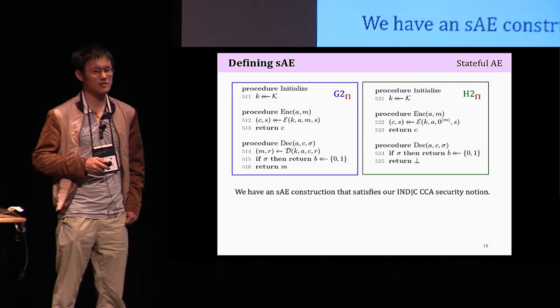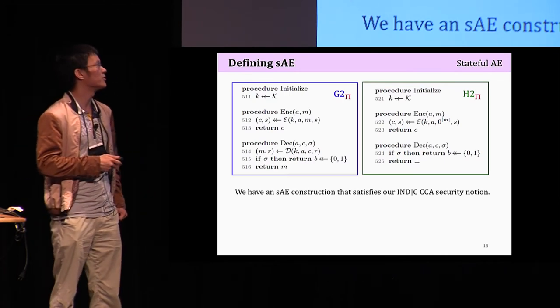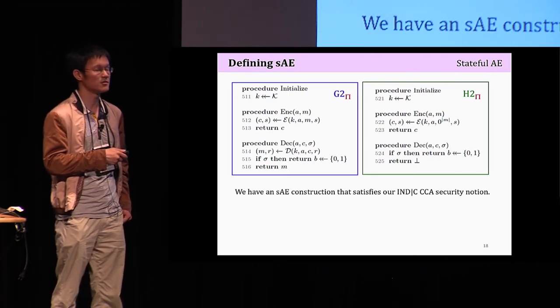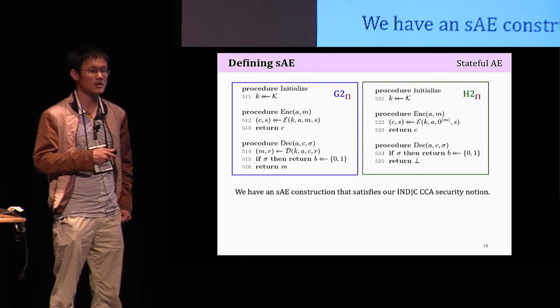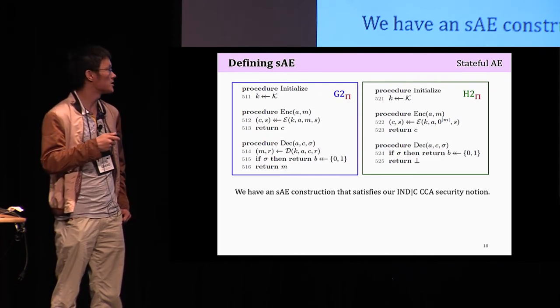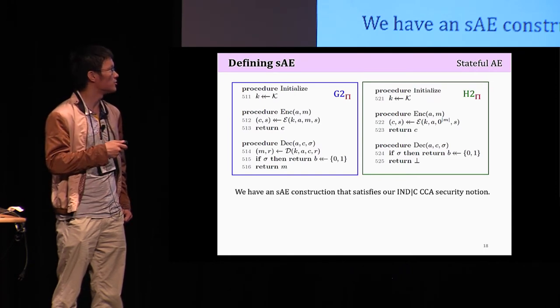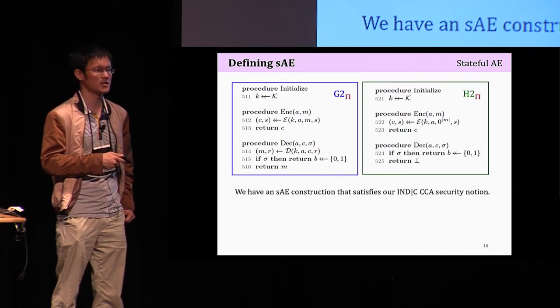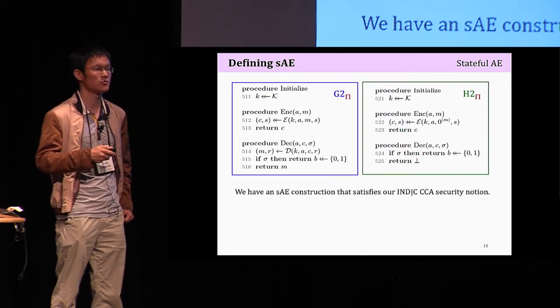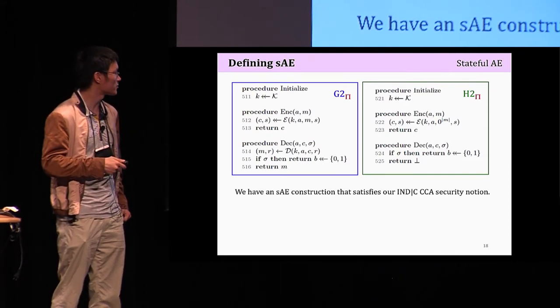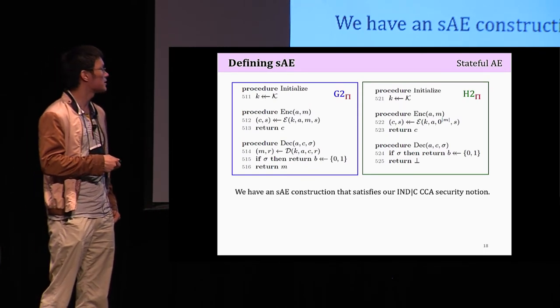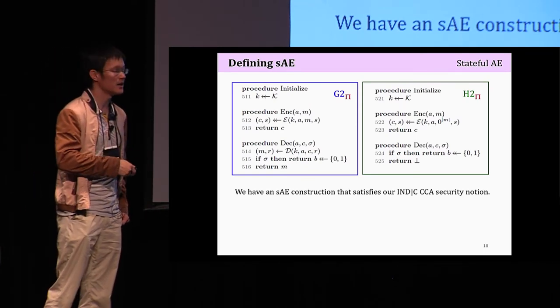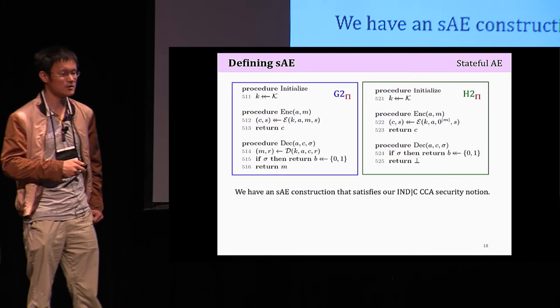The next step is to give real and ideal utopian games. As you can see, compared to prior work, our security games are much more simple. Thanks to the INDIC because we no longer need to write the explicit logic to exclude those trivial winning queries from the adversary. We have a construction that satisfies the resulting INDIC CCA security notion as well.